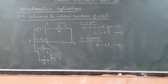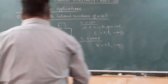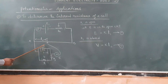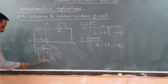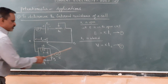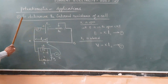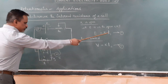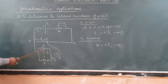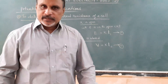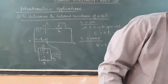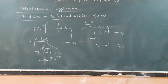When the cell is not driving current, there can be no potential difference across R. When K1 is closed, the cell drives current — that is why there is a potential difference across R. In the second case, when K1 is closed, V equals K times L2, where K is the potential gradient.